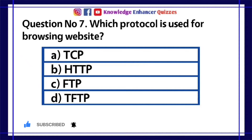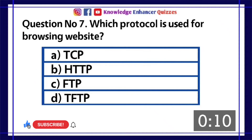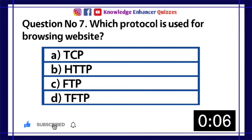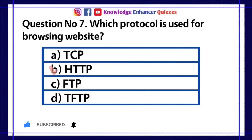Question number 7: Which protocol is used for browsing a website? A. TCP, B. HTTP, C. FTP, D. TFTP. Option B is the right answer.